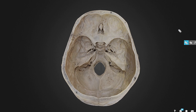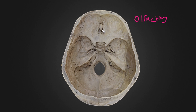The first cranial nerve is the olfactory nerve. The olfactory nerve passes through the cribriform plate of the ethmoid bone. There are 15 to 20 olfactory rootlets that come from the roof of the nose and they form an olfactory bulb in this region. So olfactory nerve — cribriform plate of ethmoid.